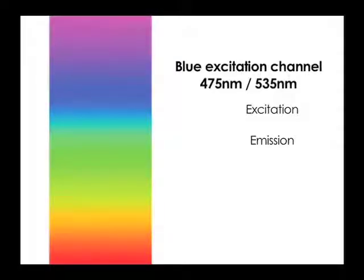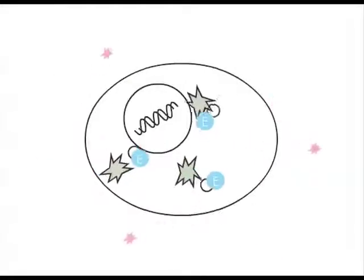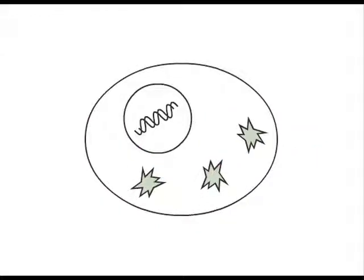Channel 1 of the cellometer is configured with an optical module with blue excitation and green emission. After incubation, nonfluorescent calcium-AM is converted into calcium and retained by live cells.